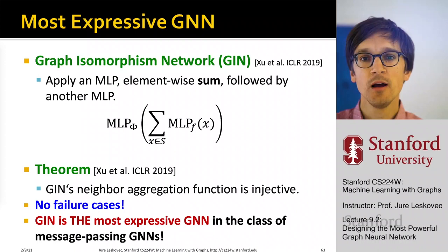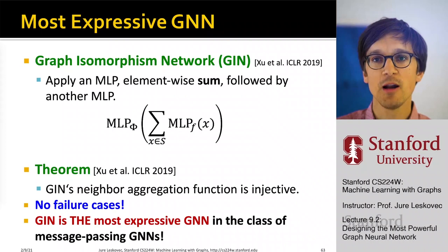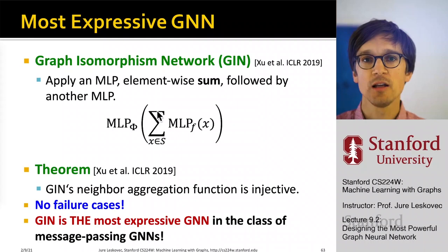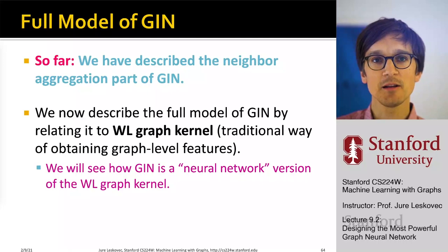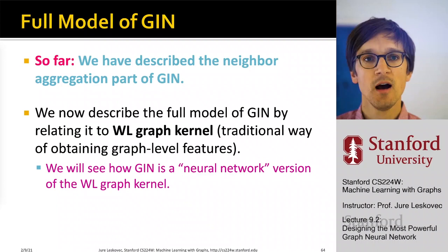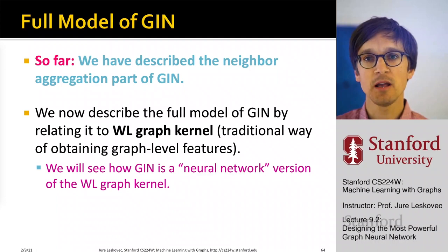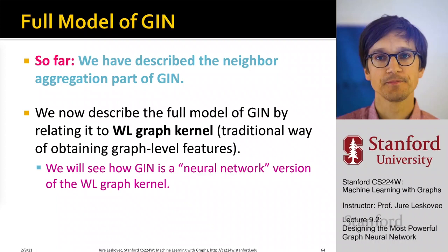It's remarkable that we can define the most powerful GNN in an entire class. We now theoretically understand that it is all about the aggregation function, and that summation aggregation is better than average, which is better than maximum. GIN's neighborhood aggregation uses summation: messages are transformed through an MLP, summed up — which has the injective property — enabling it to capture the structure of the entire computation graph.